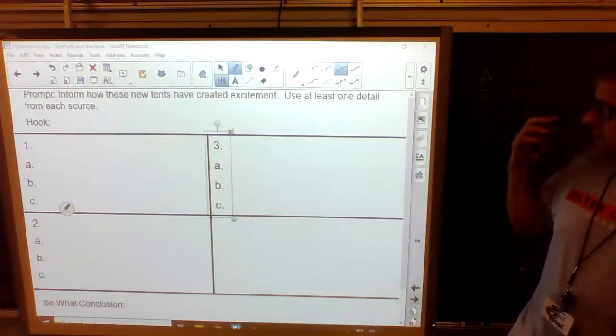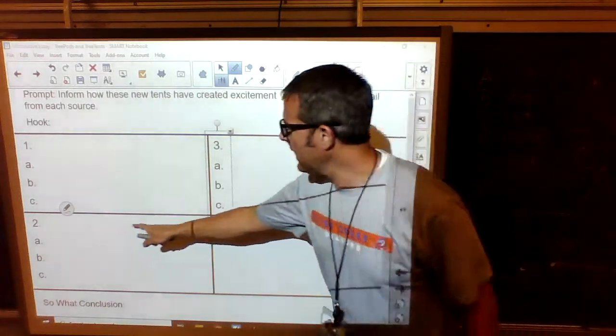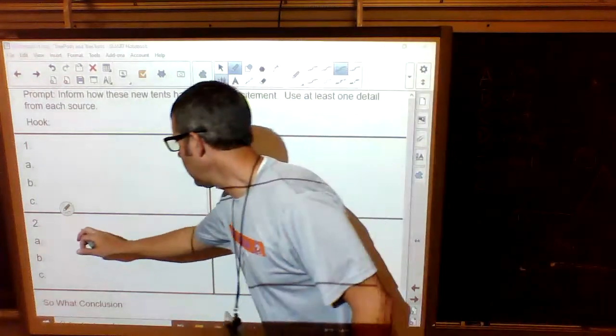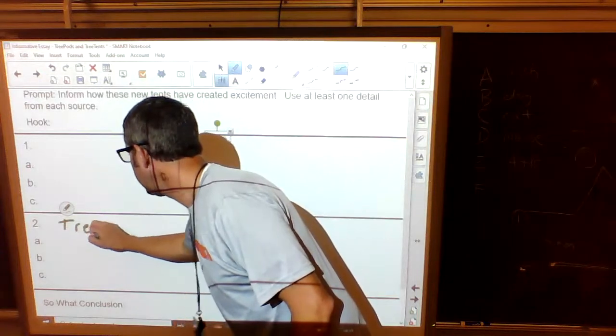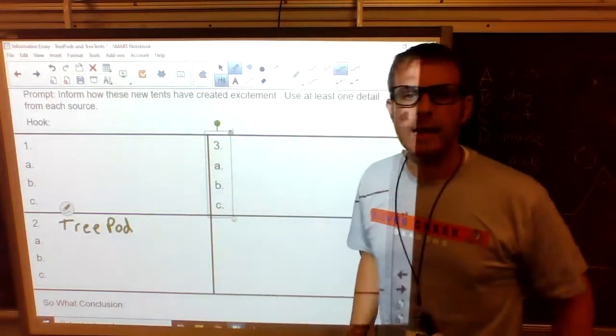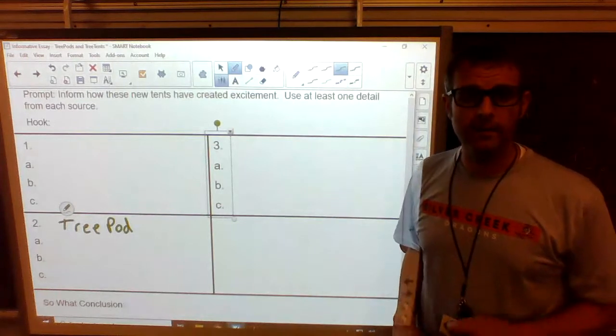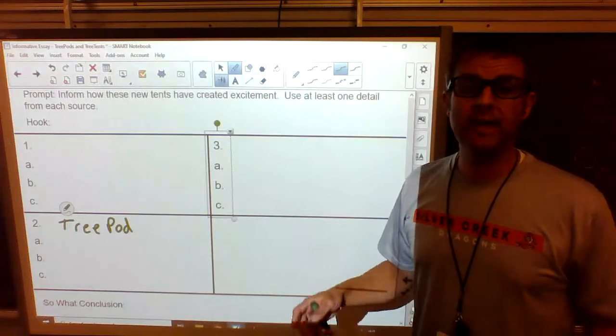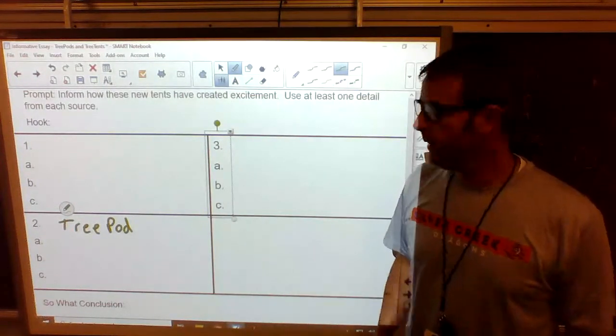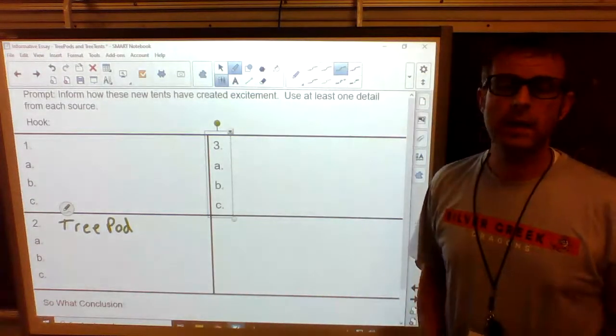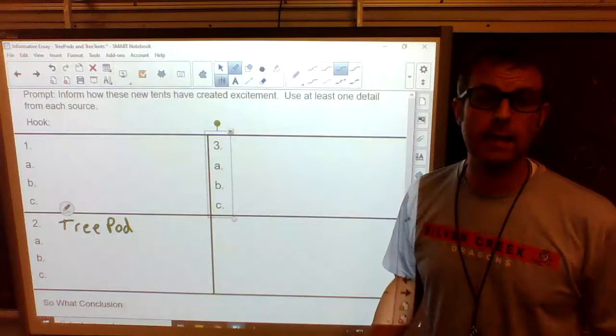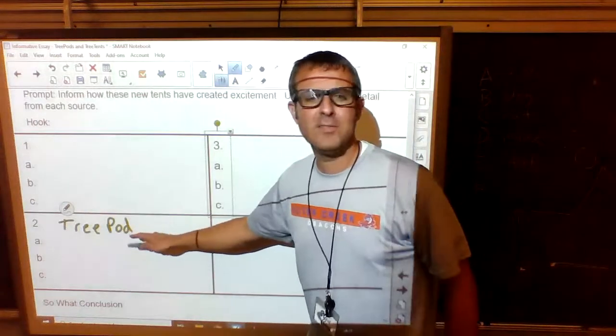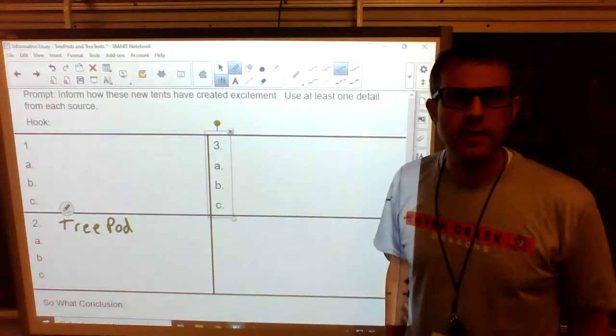So here's what I was thinking about this. I know I have to use source one and source two. So what I'm thinking is for my second box, yeah I'm skipping the first one, I'm going to come back to it. For my second box I'm going to talk about the tree pod. And I'm going to go back to that tree pod article and I'm going to try to find three things that are exciting or cool or neat or just interesting about the tree pod tent. And I'm going to write those as A, B, and C. Now if you have more than three things, add a D, an E, whatever, however many you have. We have to do at least one detail, but there's more than one detail about the tree pod that you all can find.